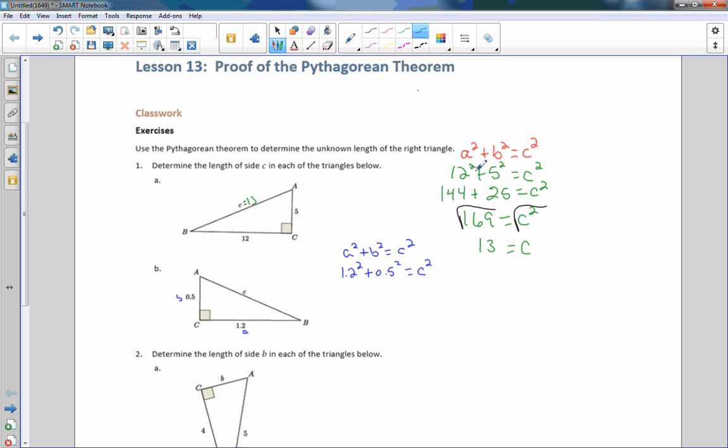If 12 squared is 144, 1.2 squared is 1.44. And if 5 squared is 25, 0.5 is going to be 0.25 equals C squared. 1.44 plus 0.25 is 1.69 equals C squared. Look familiar? It's just divisible by 10, a scale factor of 1/10 of problem number one. When we take the square root of both sides, we get C equal to the square root of 1.69 is 1.3. So C equals 1.3.